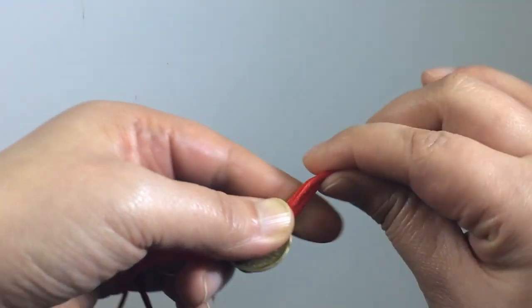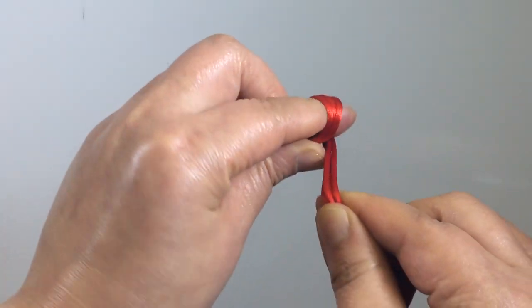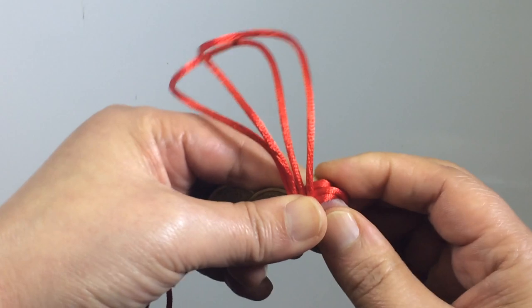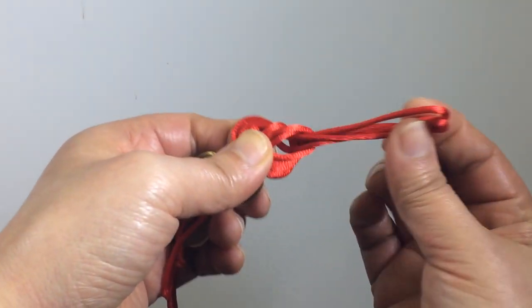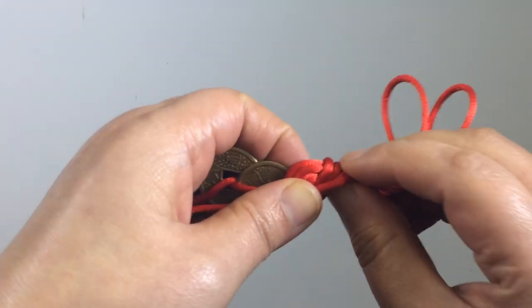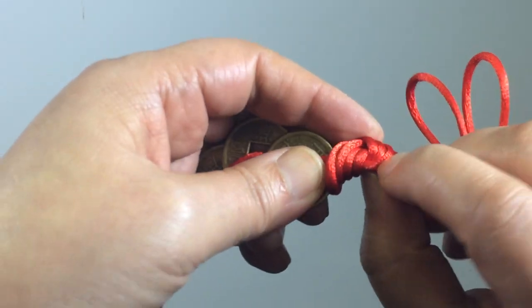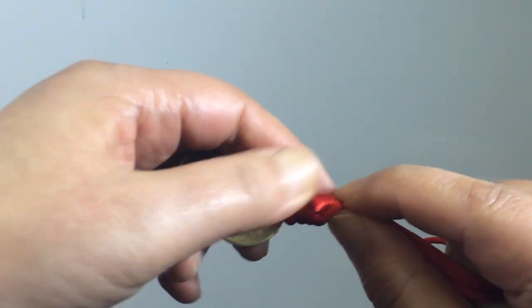Tie a tight knot like that and just make sure it goes around nicely. Now you just cut down here, cut this bit and cut this bit as well.